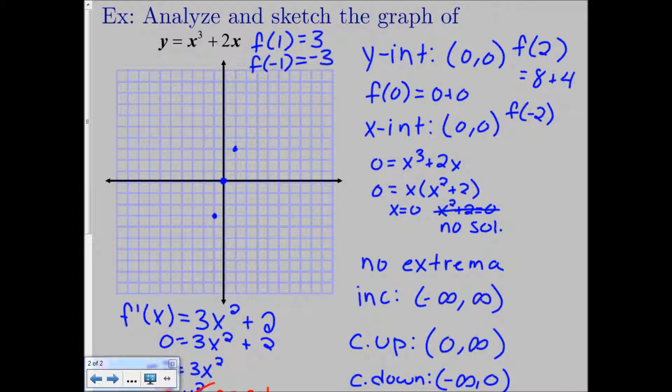And then we're going to do the same thing with the negative. So negative 2 cubed is negative 8, and then 2 times negative 2 is negative 4. So here we're going to get minus 12. So right down here.